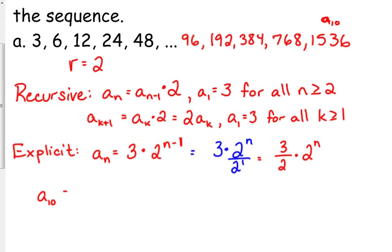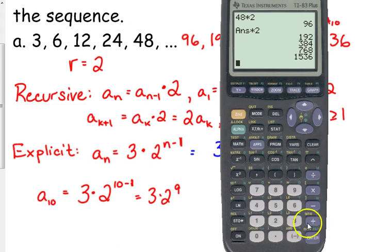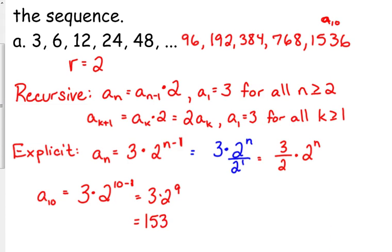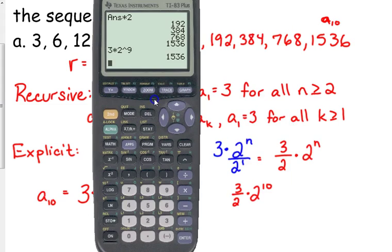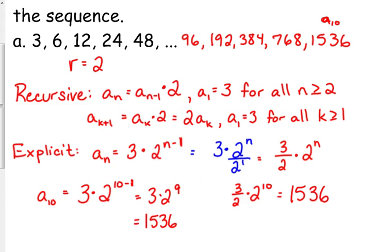So we could use either one of these to find the 10th term of our sequence. A sub 10, and I'm going to use both of them just so you can see how each one works. Plug in 10 for n, so that is 3 times 2 to the 9th, which should be 1,536. I could also use the other form: 3 halves times 2 to the 10th, which looks like it would give us a very different answer, but it actually gives us the same answer, 1,536. So that's a way you could check.